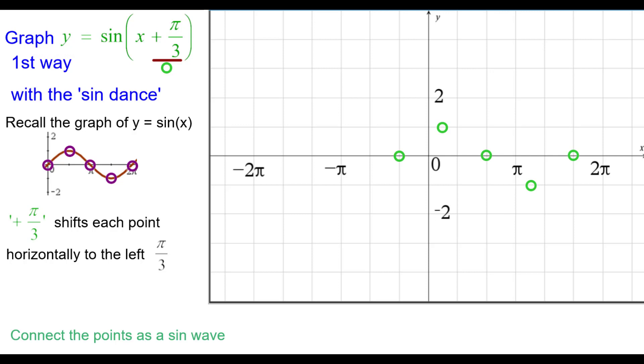Connect the points as a sine wave so that will be concave down then concave up. This is one period of the sine wave so let's duplicate it in the negative direction to the left. So we'll start at this point and go back 2 pi units, 1 period.